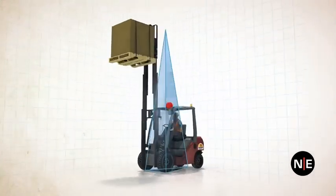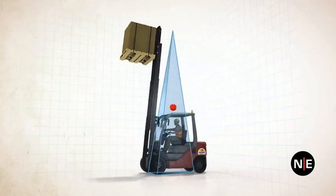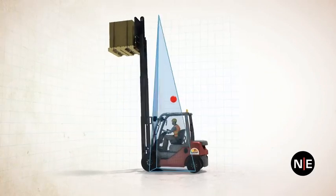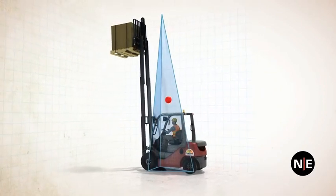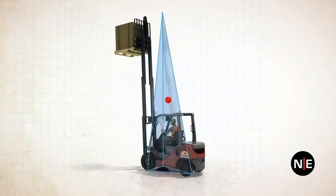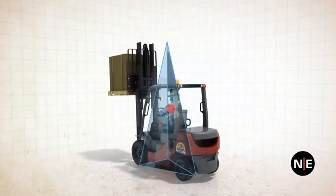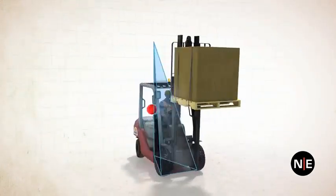Raising the forks elongates the stability pyramid, making it tall, skinny, and much easier to tip over. The center of gravity rises as the load rises, and now needs to shift only a short distance to get outside the narrowing top of the pyramid, which would cause a tip over, especially if the machine is moving.